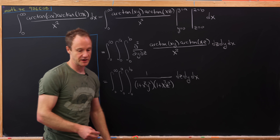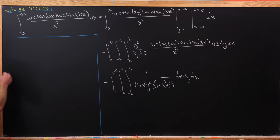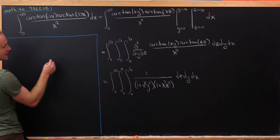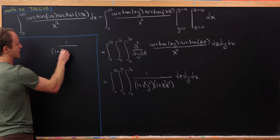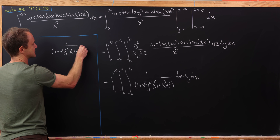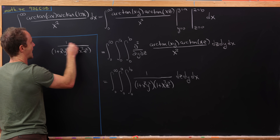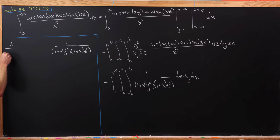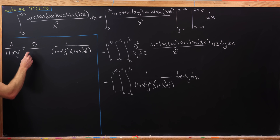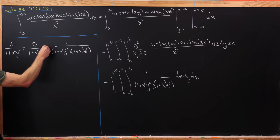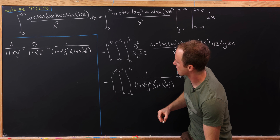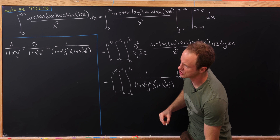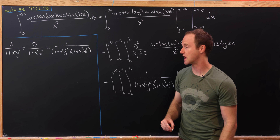That's exactly what we're going to do. We want to write 1 over (1 plus x squared y squared)(1 plus x squared z squared) as a over (1 plus x squared y squared) plus b over (1 plus x squared z squared), where we're thinking of x as our variable and y and z as constants, just with respect to this partial fraction decomposition.